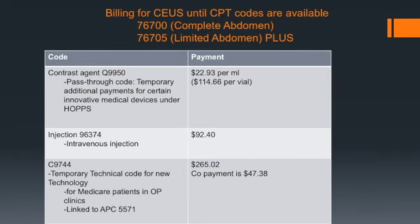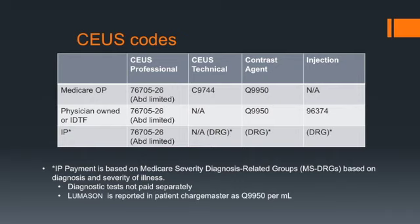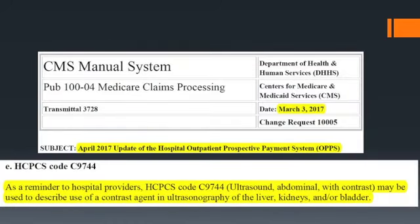C9744 and Q9950 can be used for Medicare outpatients. Patients at physician-owned imaging facilities or independent diagnostic testing facilities can bill Q9950 and 96374 but cannot bill C9744. Inpatient payment is based on Medicare severity diagnosis-related groups, or DRGs, based on diagnosis and severity of illness; diagnostic tests are not paid separately under DRGs. However, Lumison should always be reported in the patient charge master as Q9950 per mL. In March 2017, CMS extended C9744 to cover use of ultrasound contrast agents in the kidneys and bladder as well as the liver.